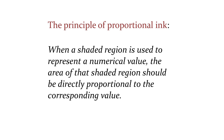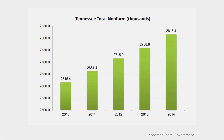The principle of proportional ink applies particularly when we're representing numbers by shading areas on a page — in bar graphs or that kind of thing. When a shaded region is used to represent a numerical value, the area of the shaded region should be directly proportional to that corresponding value. Here's an example from Tennessee state government, boasting about the increase in revenue they've been able to produce in the state.